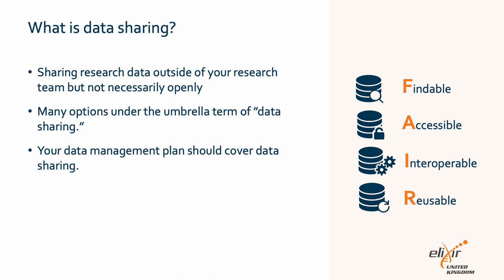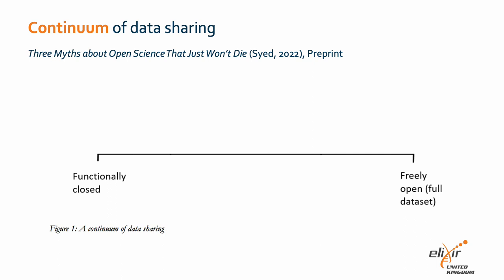Also, even if you can't openly share the raw data, there are still steps you can take to make your research outputs more FAIR, which stands for findable, accessible, interoperable, and reusable. Many researchers assume data sharing is all or nothing — fully open or fully closed — when actually there is a whole spectrum of different options.